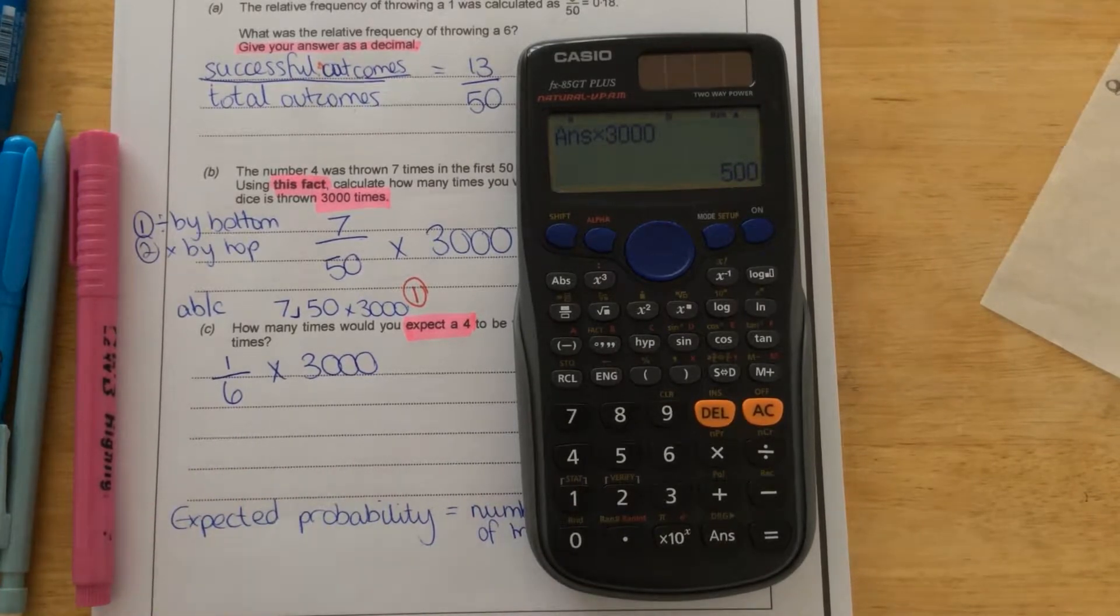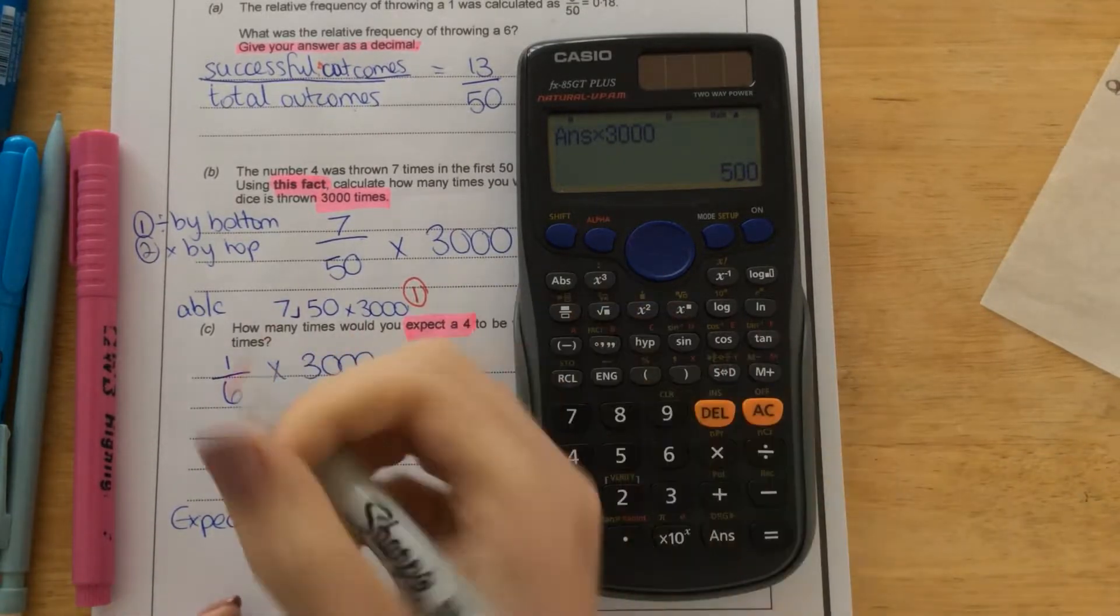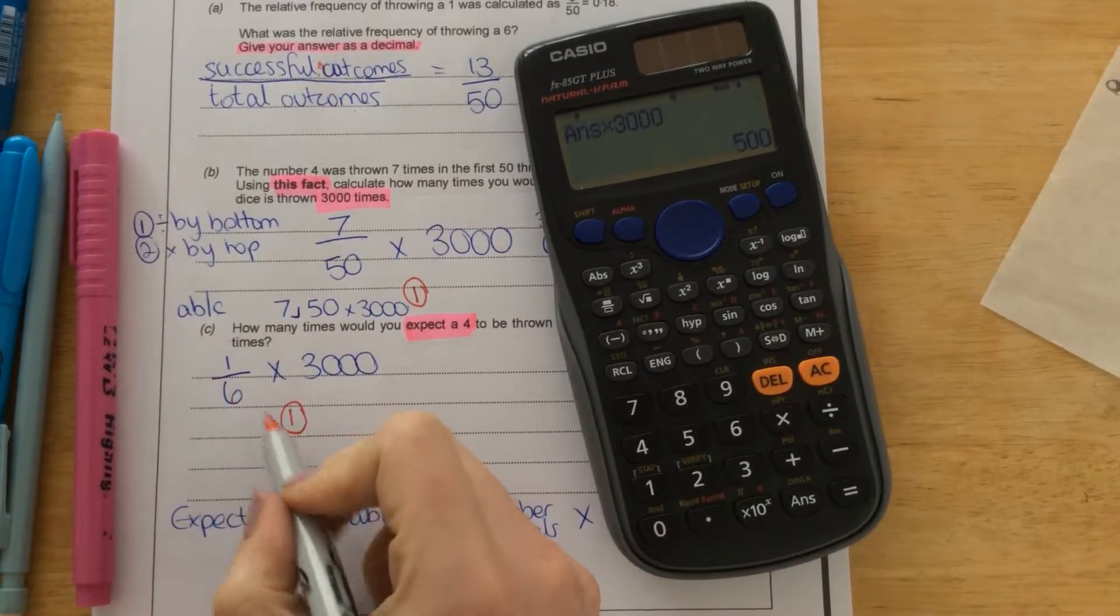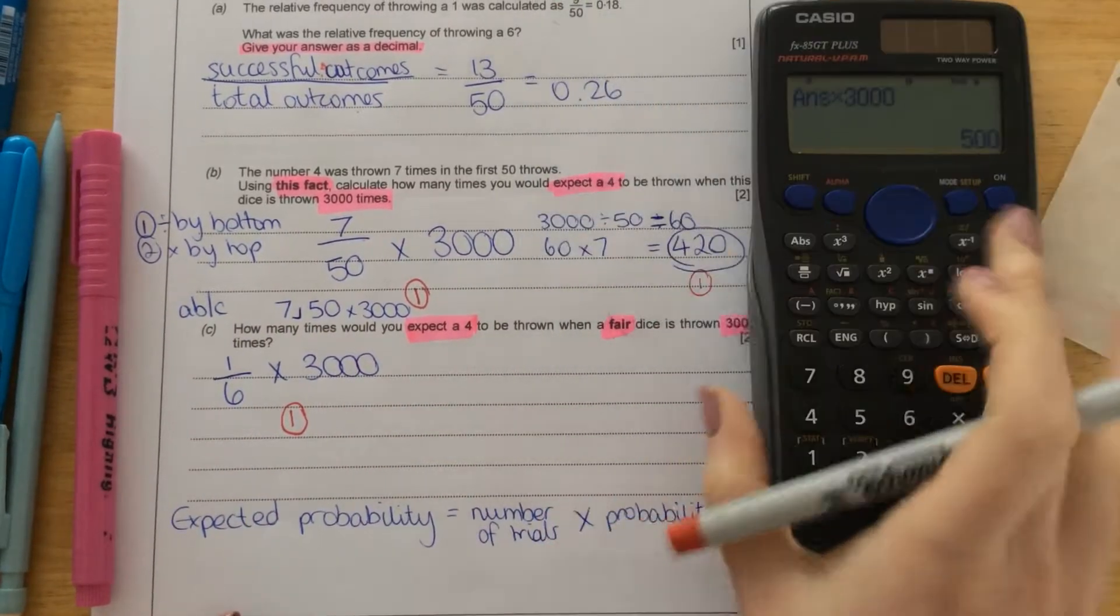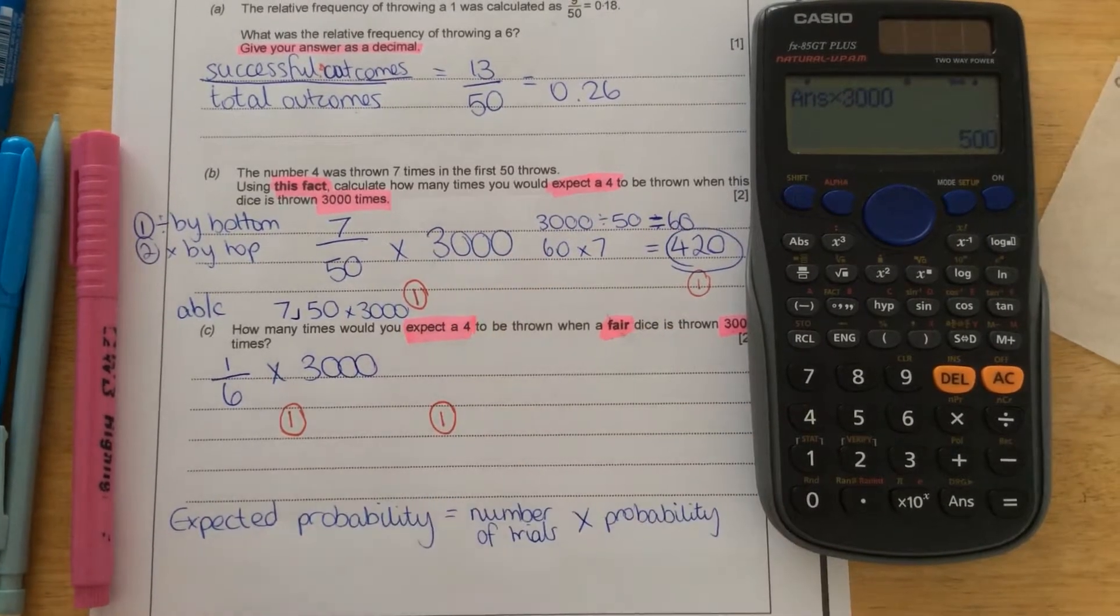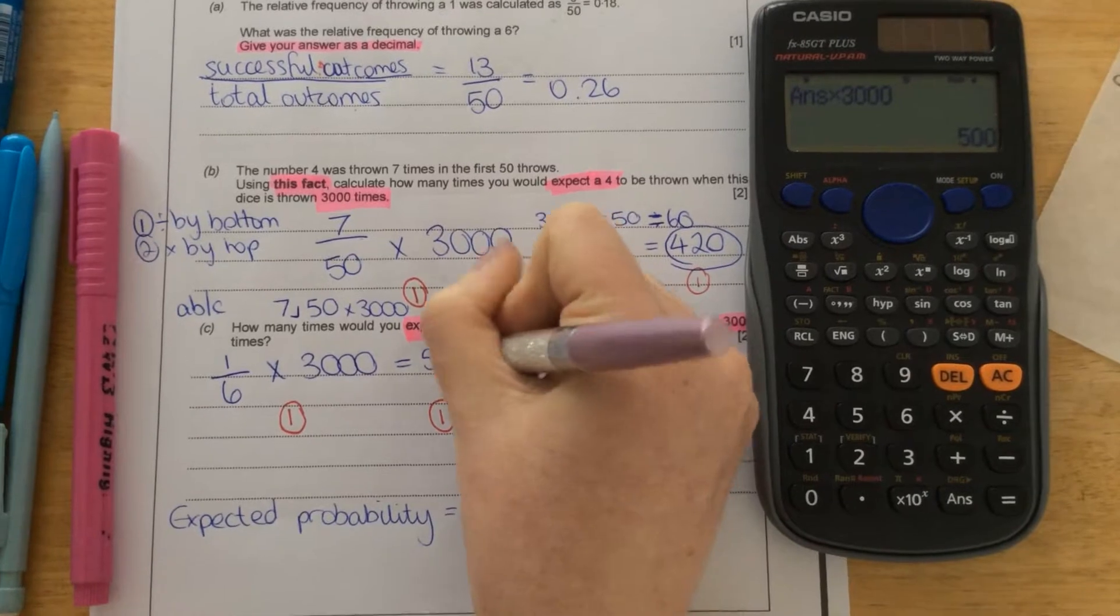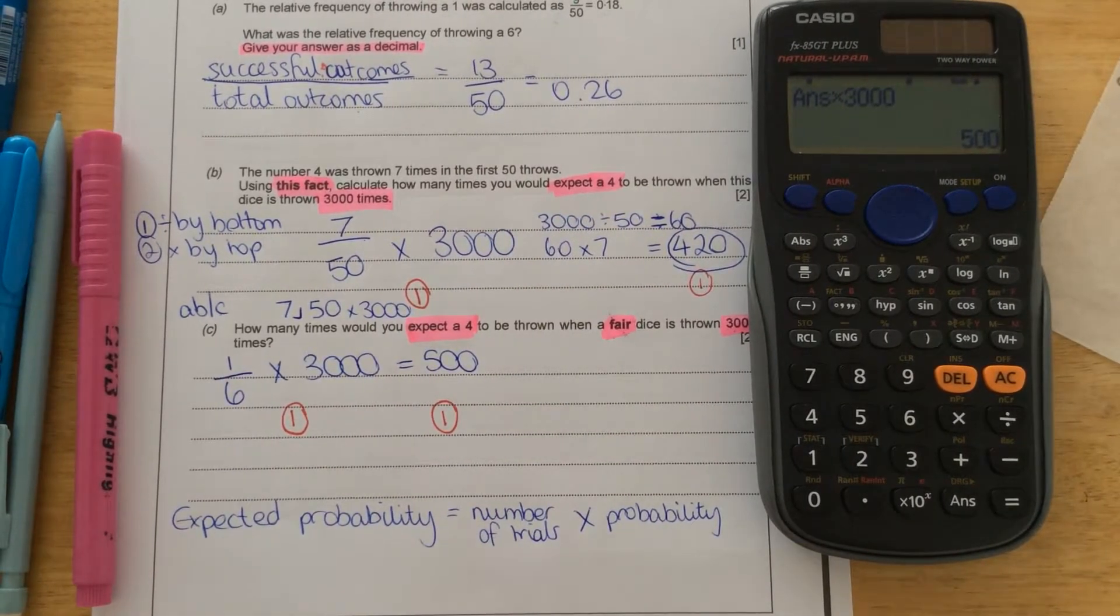Again, the examiner will give you one mark just for writing that sum because you know how to work out expected probability. And one mark there for your final answer of 500. Okay. Thank you.